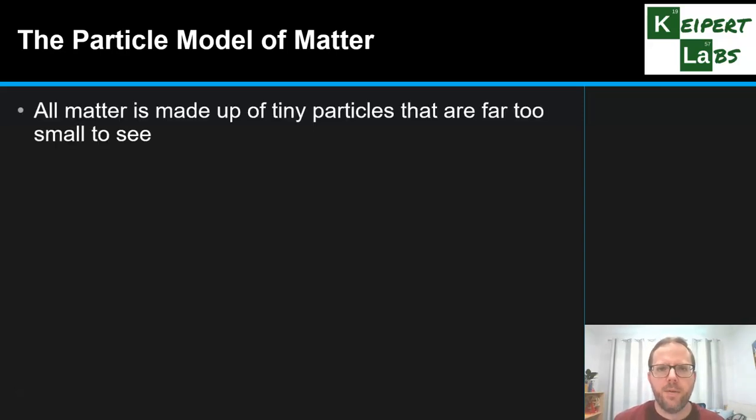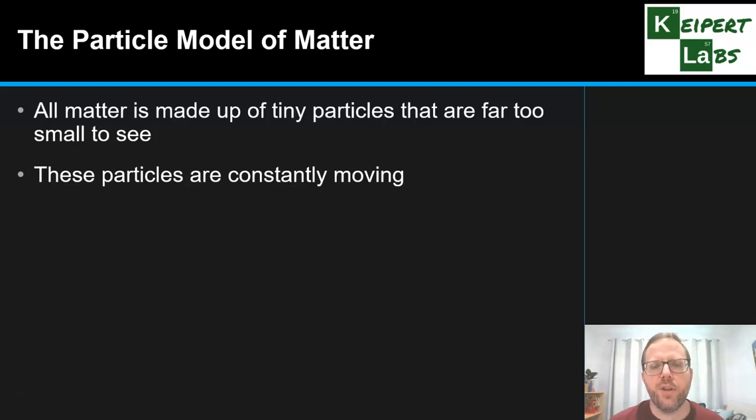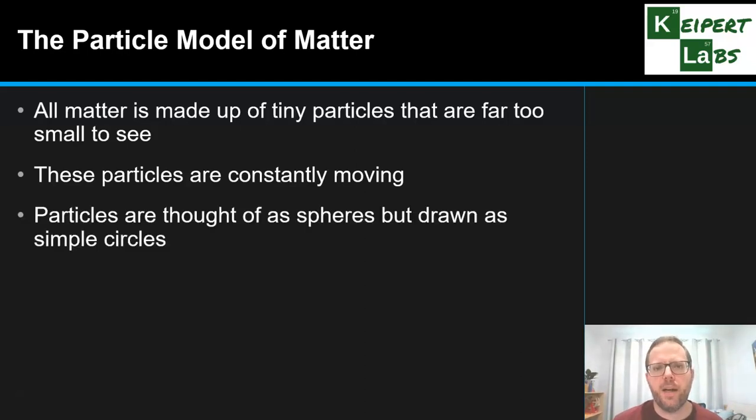The first principle is that all matter is made up of tiny particles that are far too small to see, that everything can be reduced down to a level at which it's made up of these small particles. These particles are constantly moving. That movement can be vibration. It can be moving from one place to another, but constant motion is a key feature of what these particles are like.